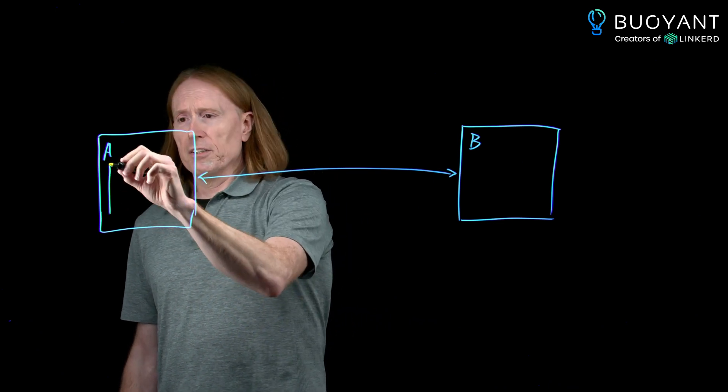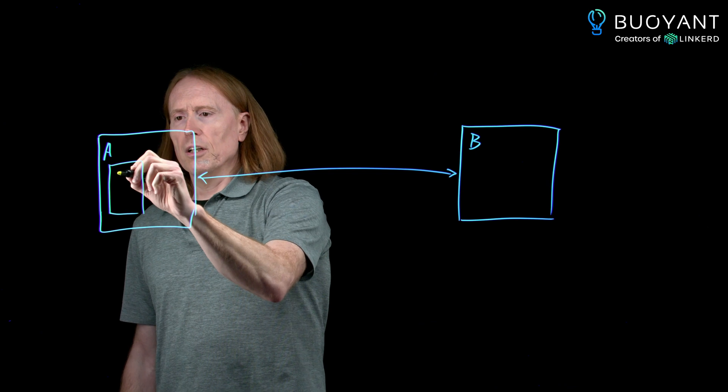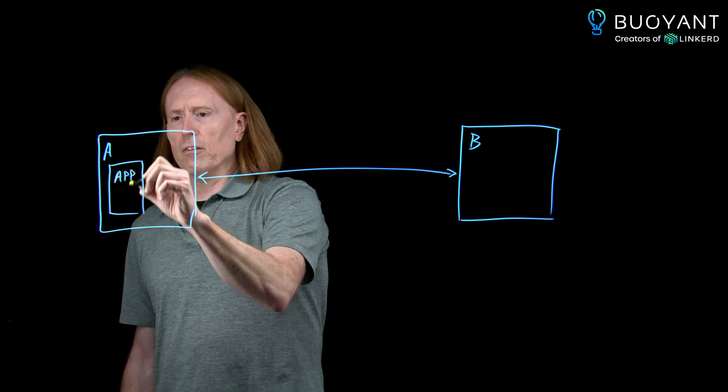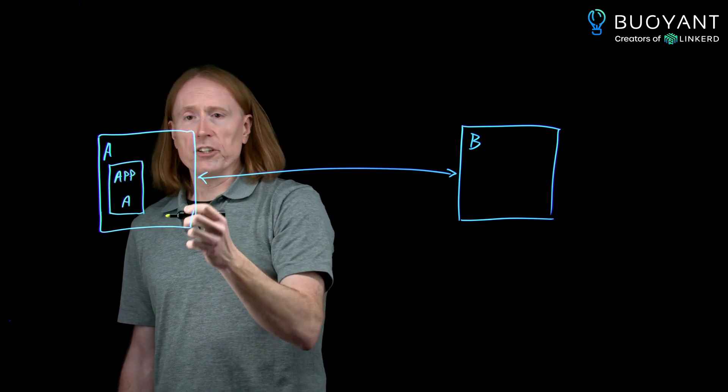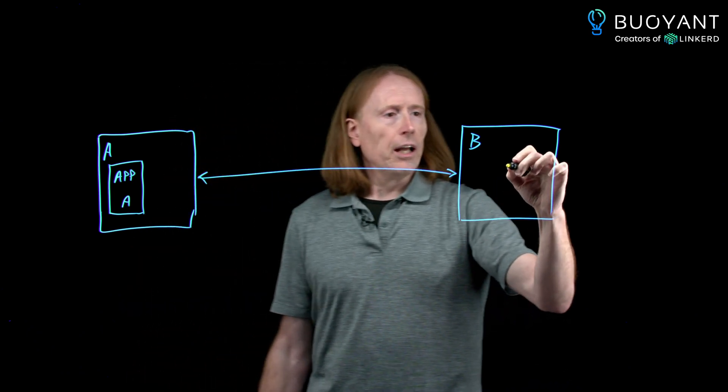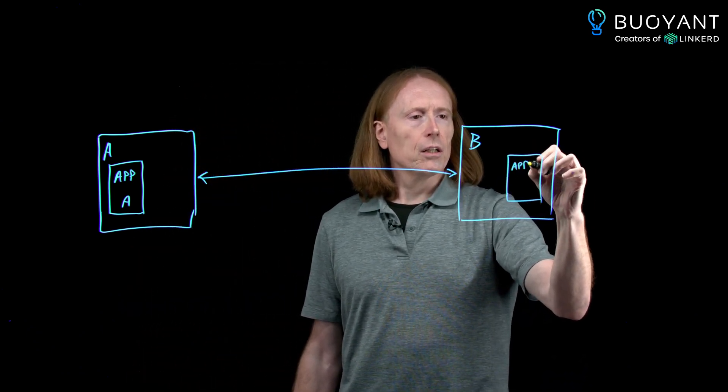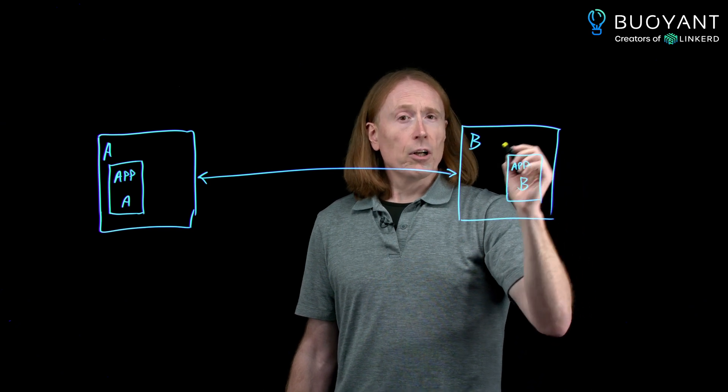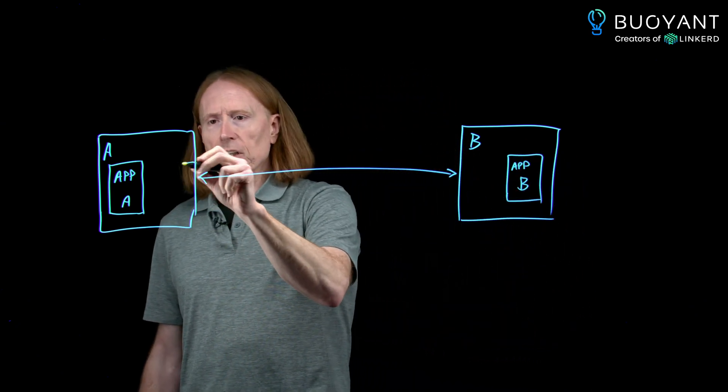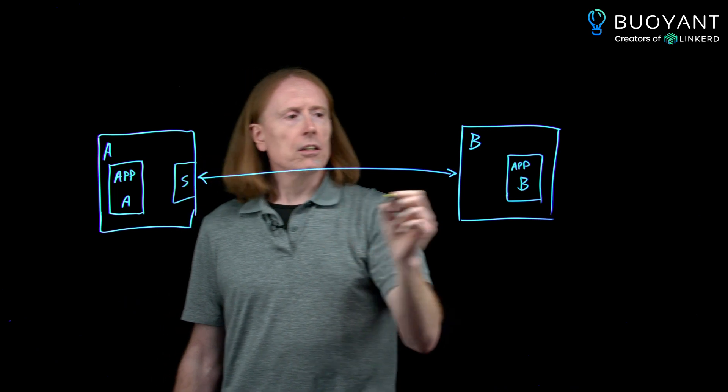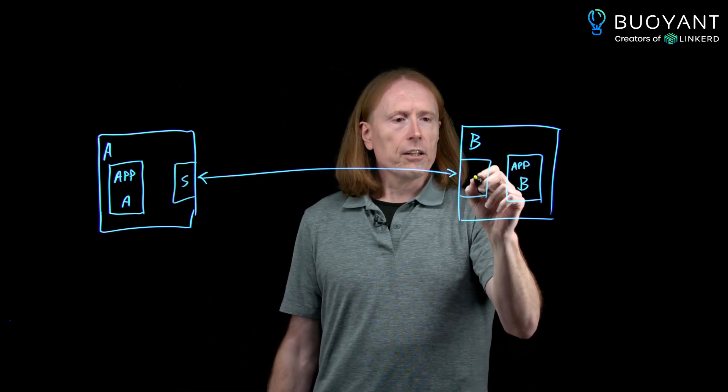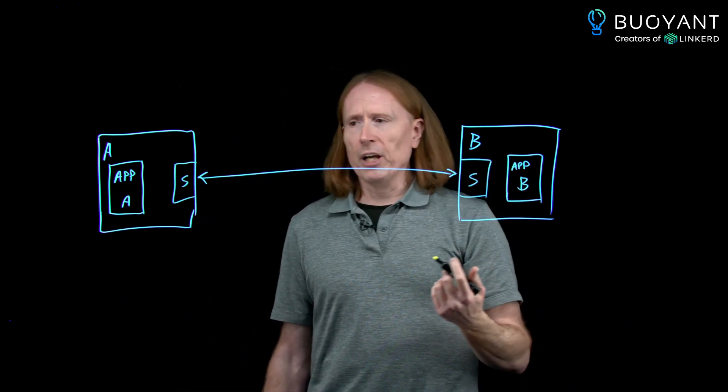If we take a deeper look into these workload pods, we'll have a container that is running the application code for workload A, and we'll have another container running the application code for workload B, but also as soon as the mesh is involved, we'll have sidecar containers. Sidecar containers embody the mesh.